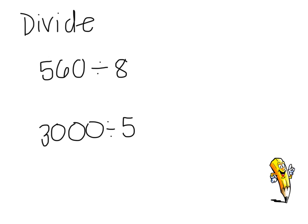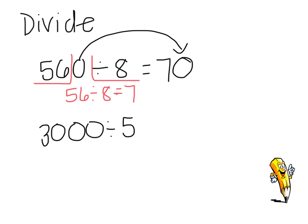To divide 560 by 8, I'm going to use the basic fact of 56 divided by 8. I know 56 divided by 8 is 7 because 8 × 7 equals 56. That tells me that 560 divided by 8 is going to be 7 plus that zero, or 70.